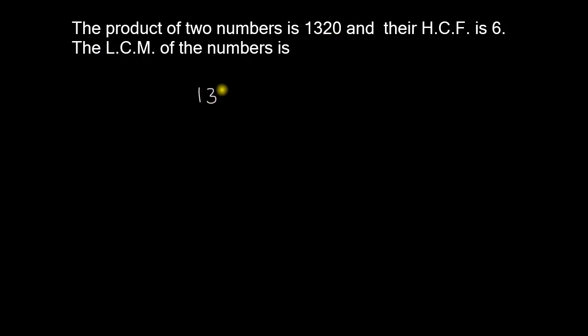So one thousand three hundred twenty equals the product of two numbers, which equals the highest common factor, that is six, times the least common multiple.